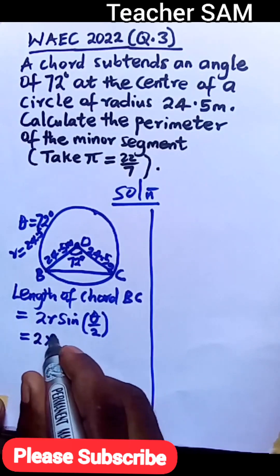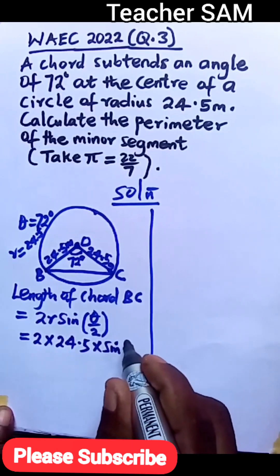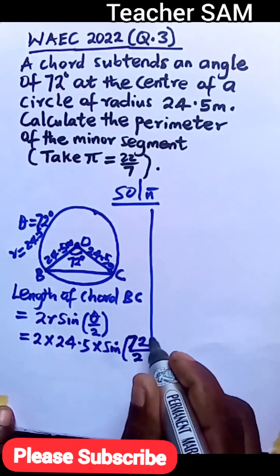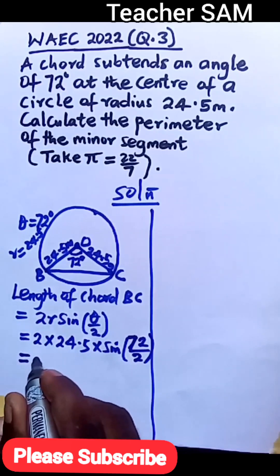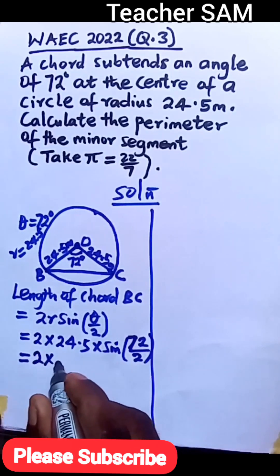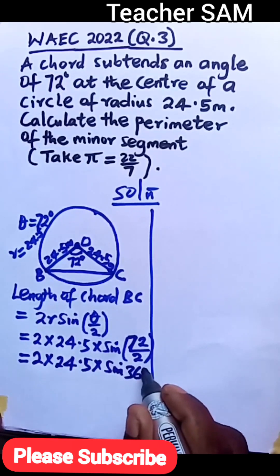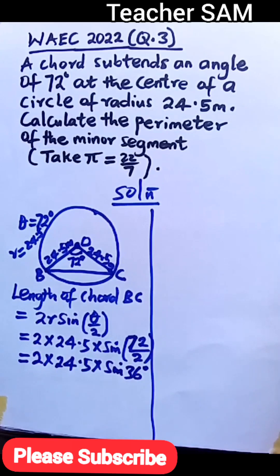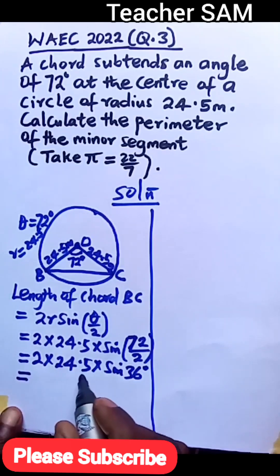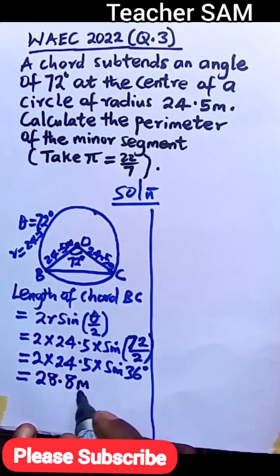This becomes 2 times 24.5 times sine(72 divided by 2), which is sine 36 degrees. When you multiply the whole of this — 2 times 24.5 times sine 36 degrees — you get 28.8 meters. So that is the length of chord BC.